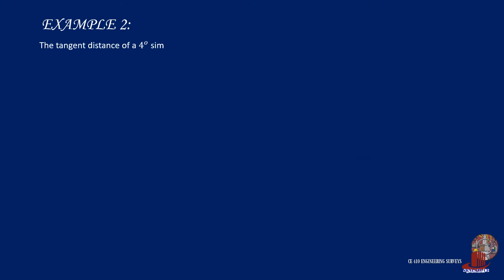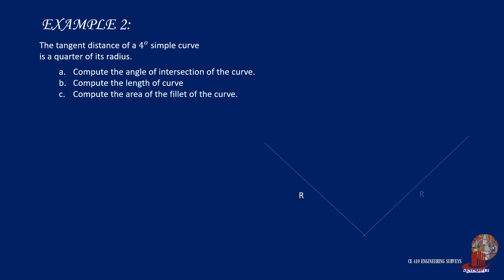Let's see how to solve example 2. The tangent distance of a 4-degree simple curve is a quarter of its radius. Requirement A: Compute the angle of intersection of the curve. B: Compute the length of the curve. And C: Compute the area of the fillet of the curve. The sole given value in the problem is the degree of the simple curve, which is 4 degrees, but there is also the relationship which states that T is equal to one-fourth of the radius.